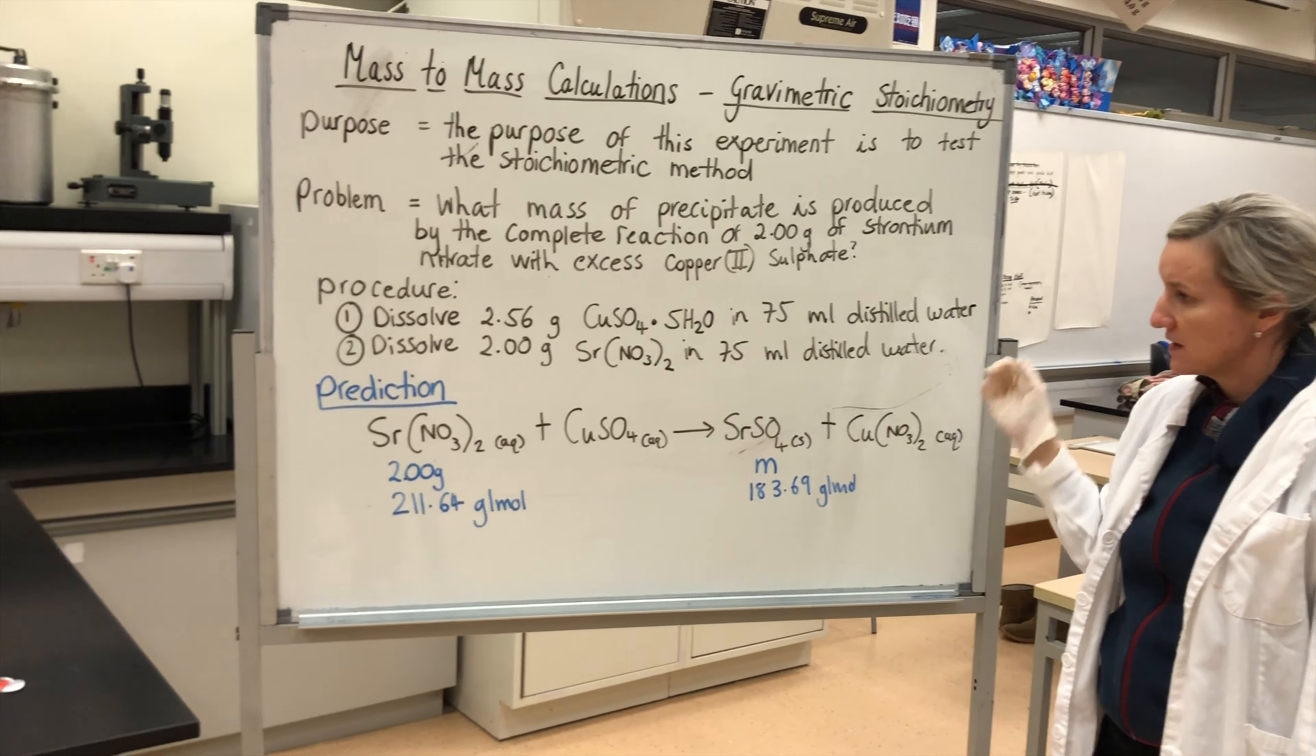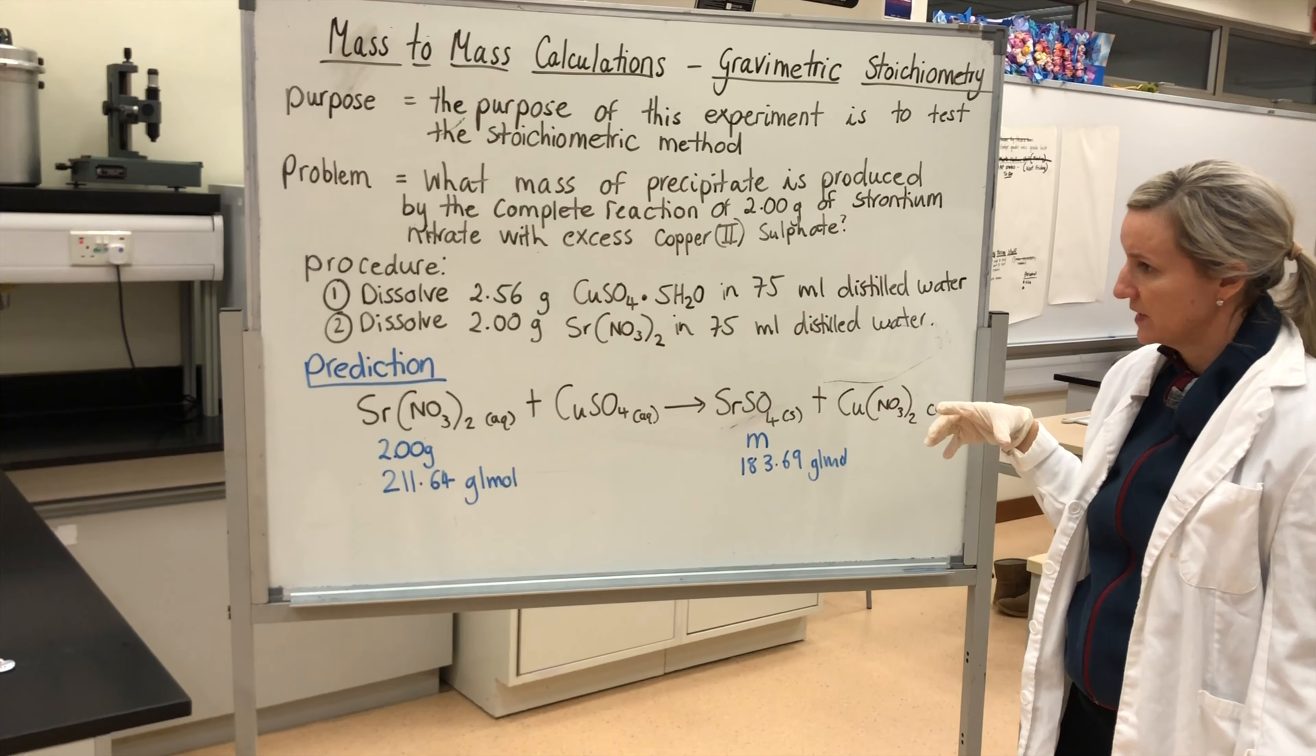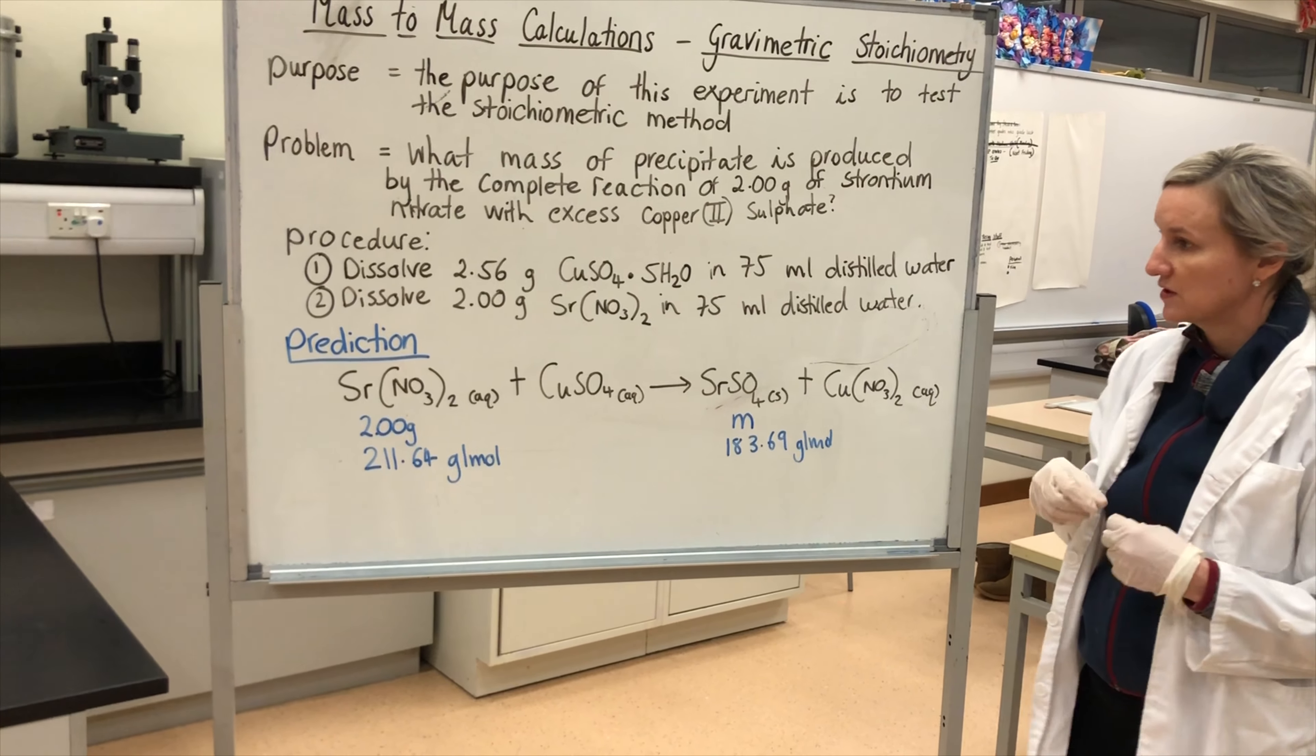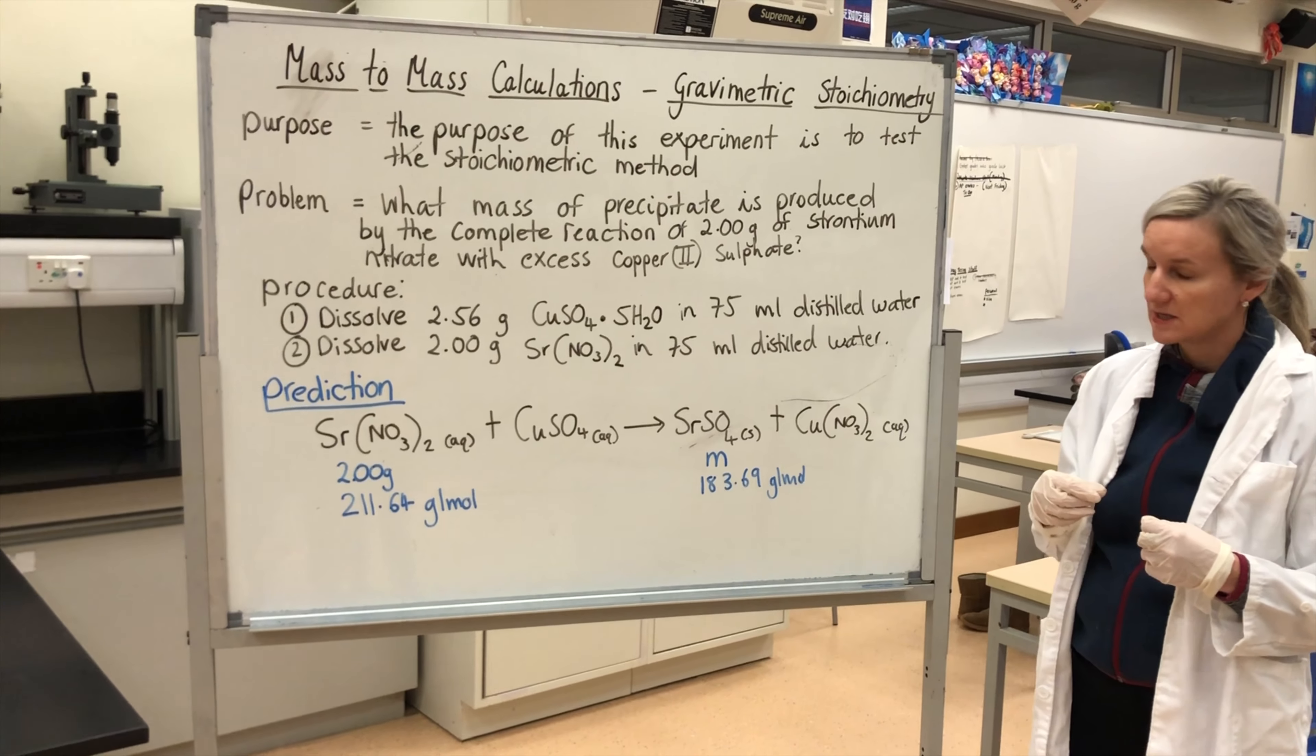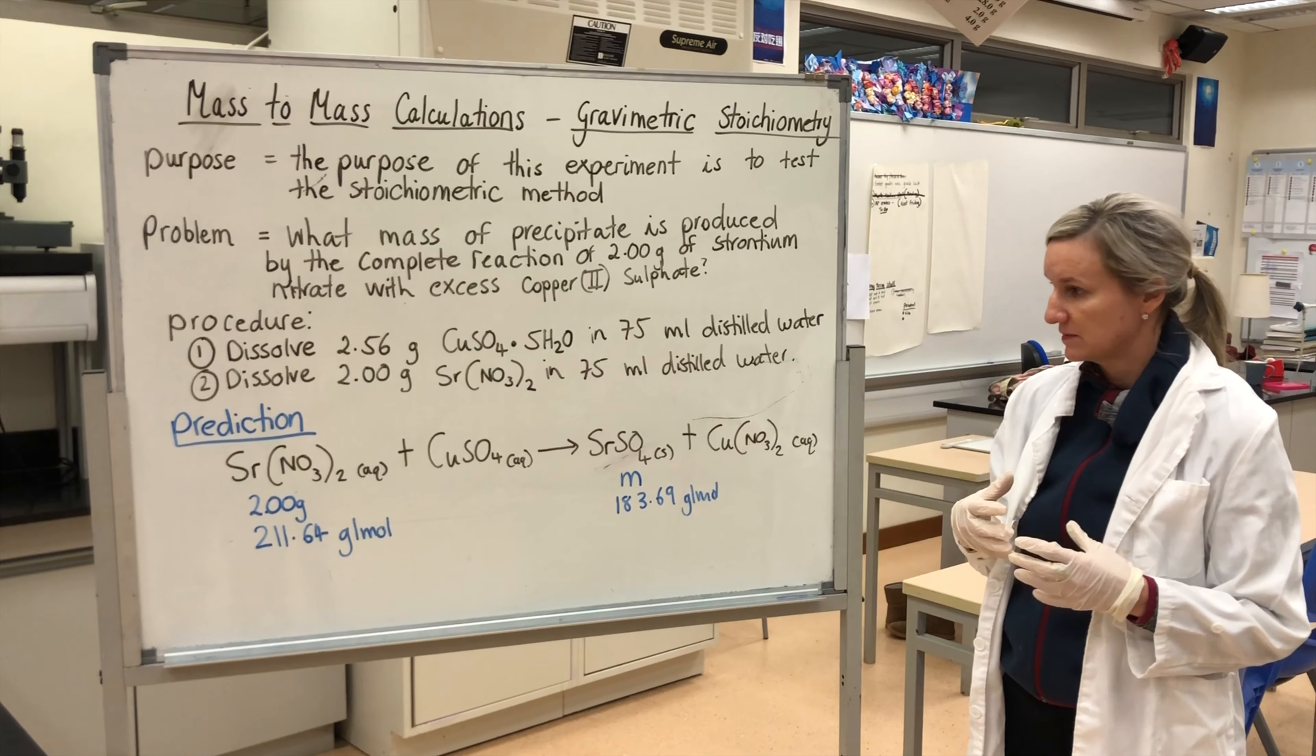Then I'm going to add 75 mils of distilled water to it. I'm going to join the two together and create a precipitate, and then I'm going to filter that precipitate.